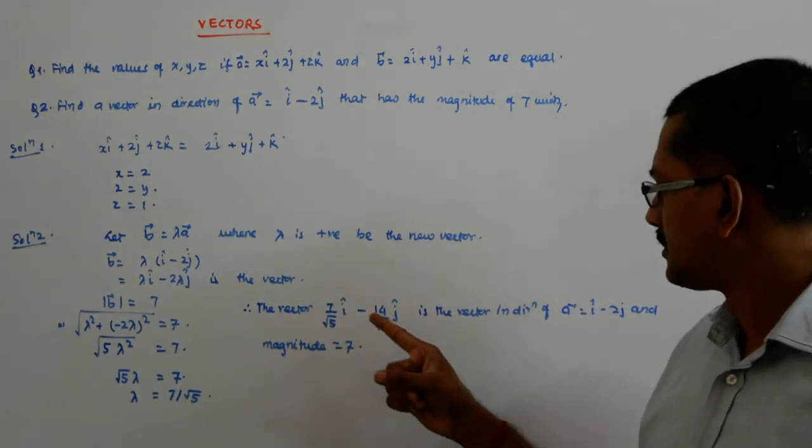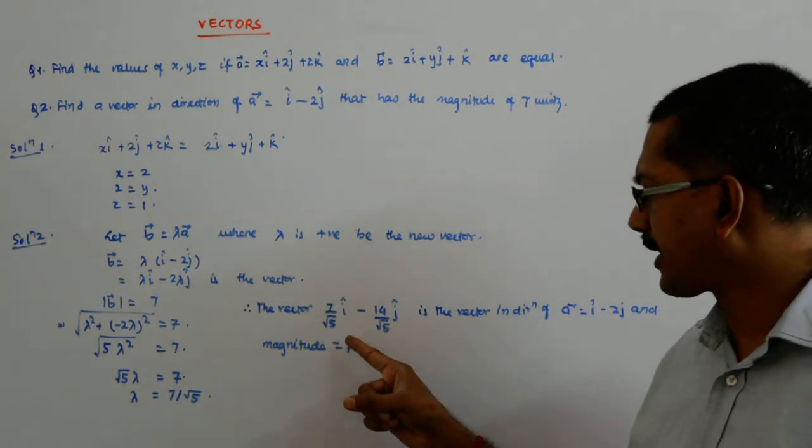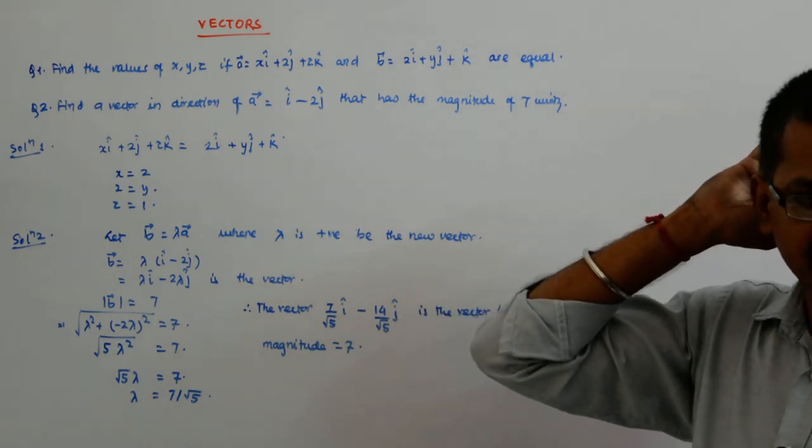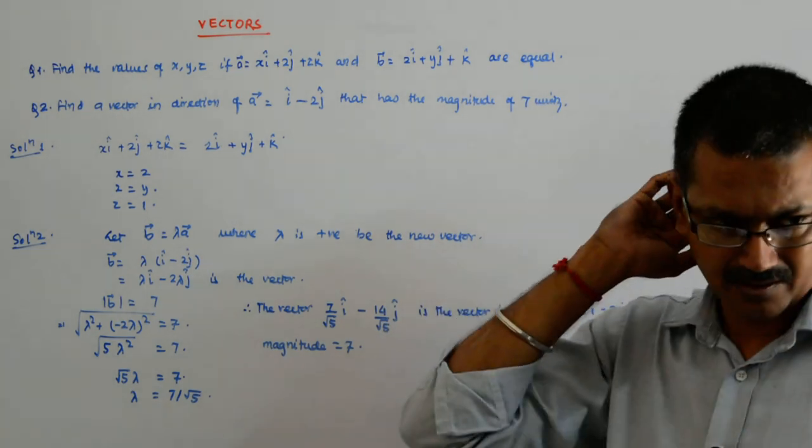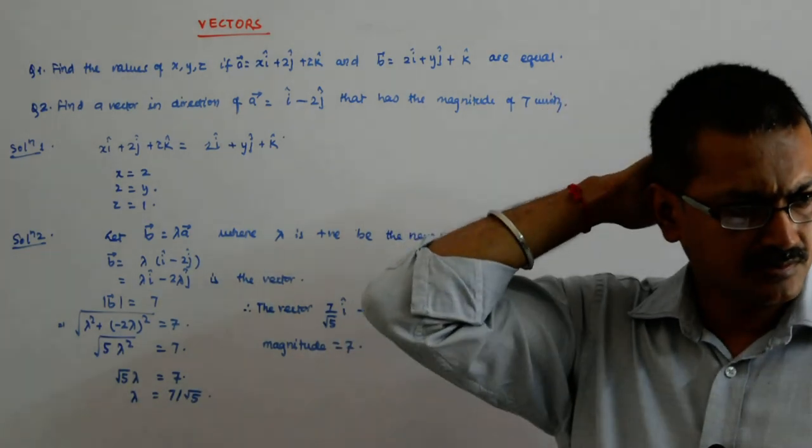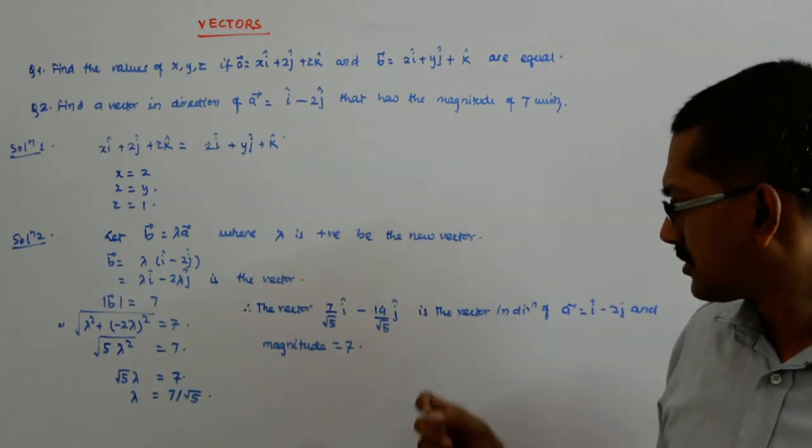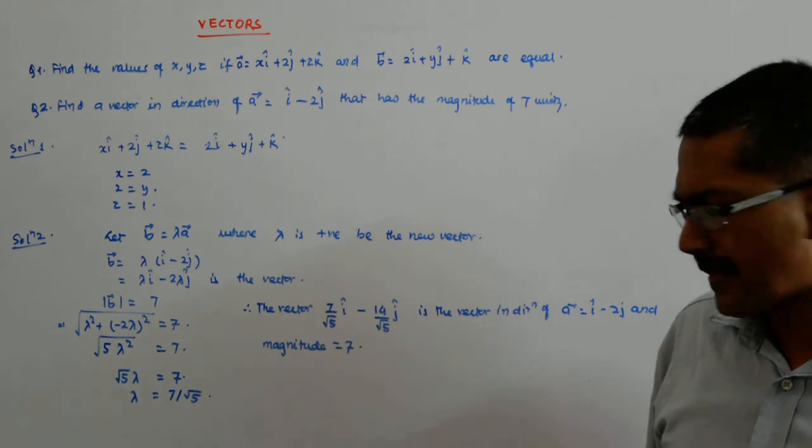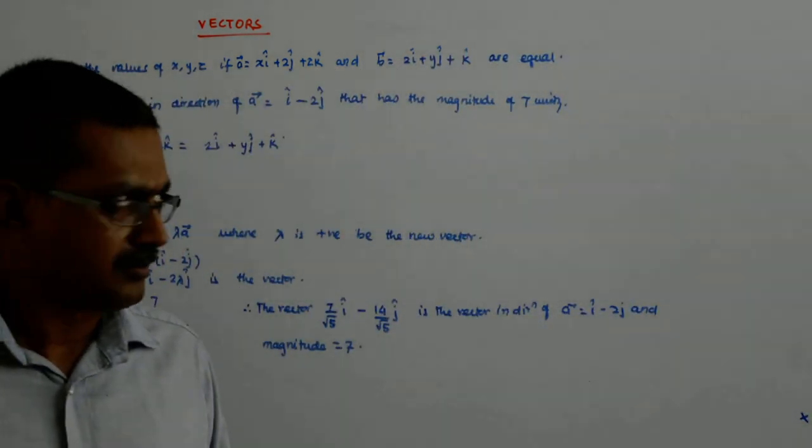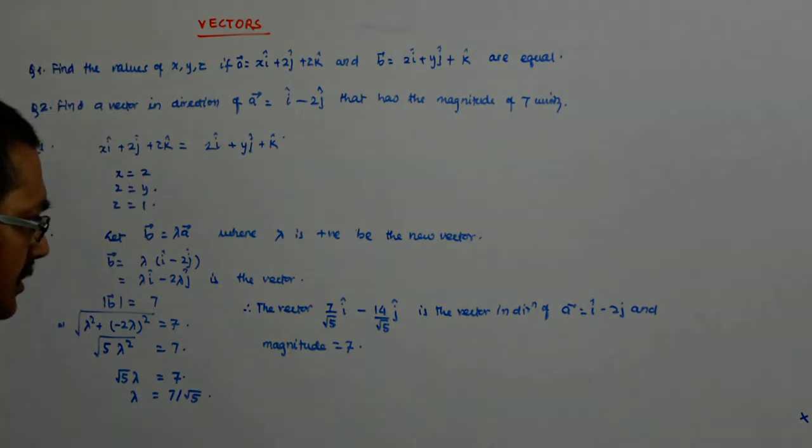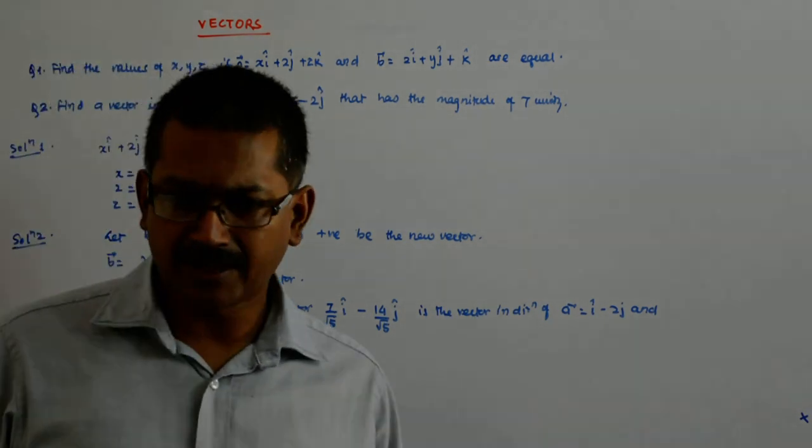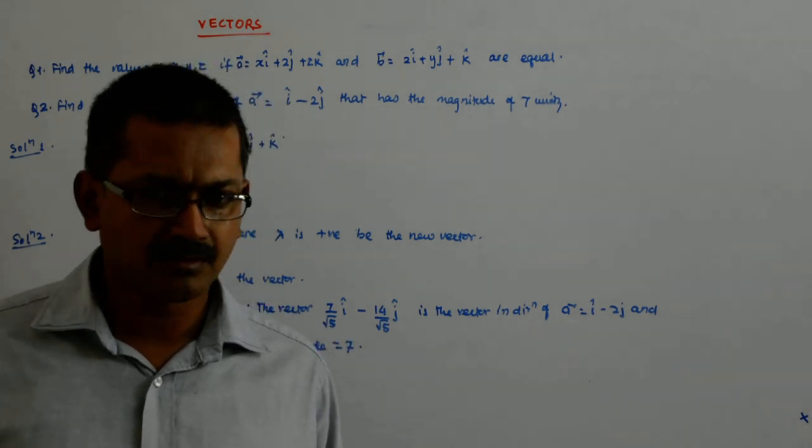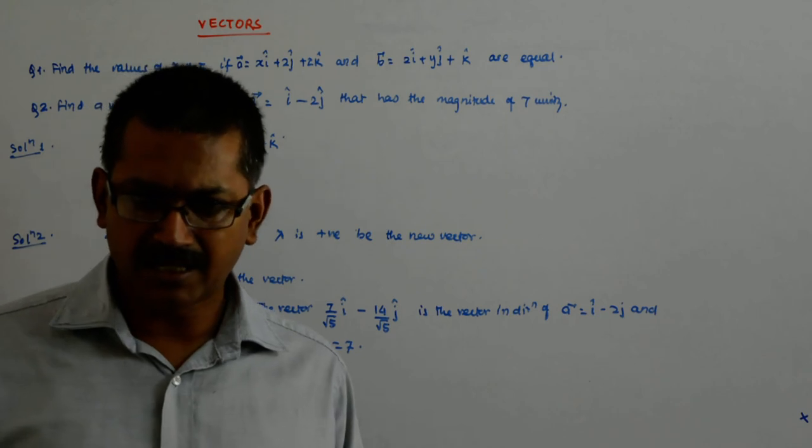Just check, square it, so it is 49 upon 5 plus 196, 49 plus 196 is how much? This is 196 and this is 49, 196 plus 49 is 245, that divided by 5 is 245 by 5 is 49, root of that is 7.